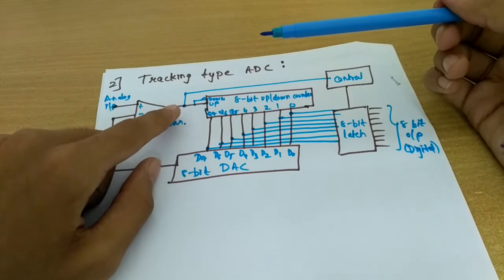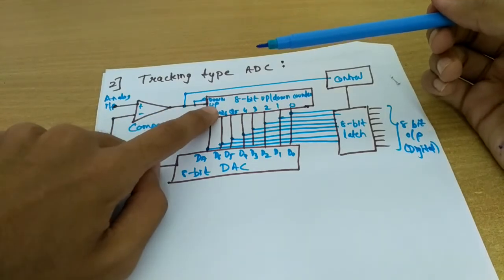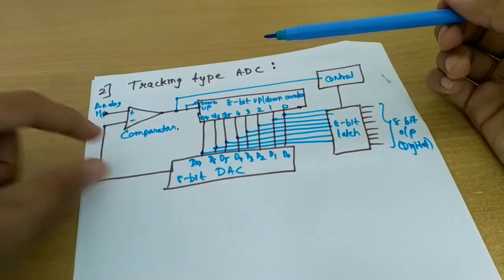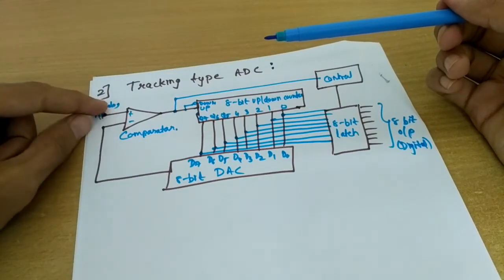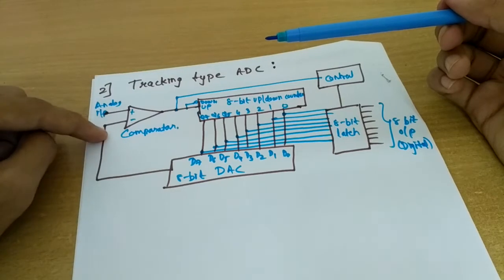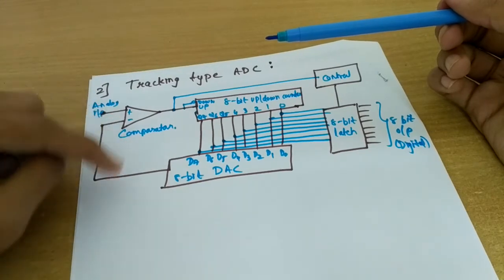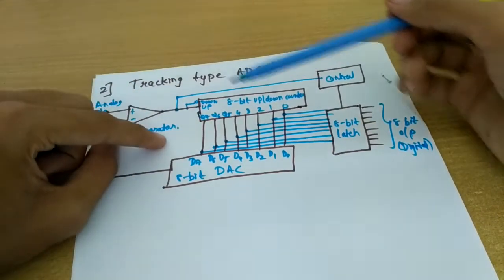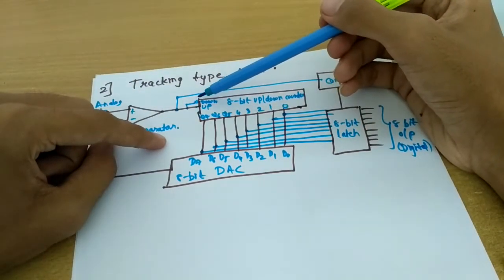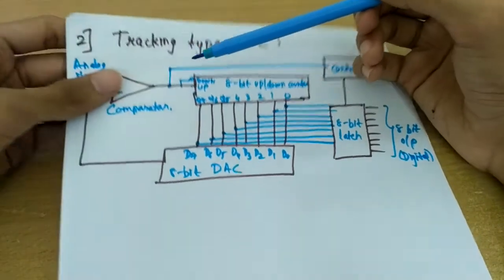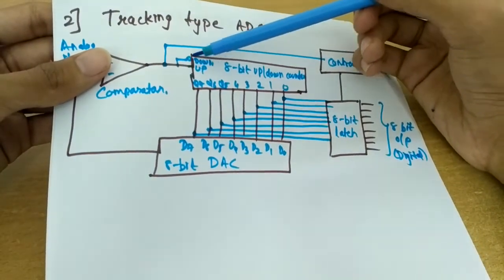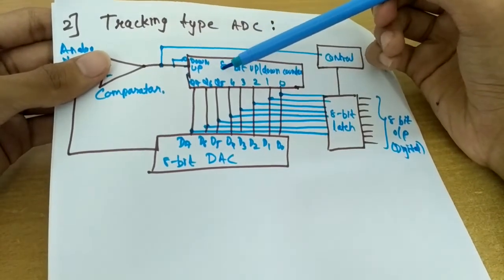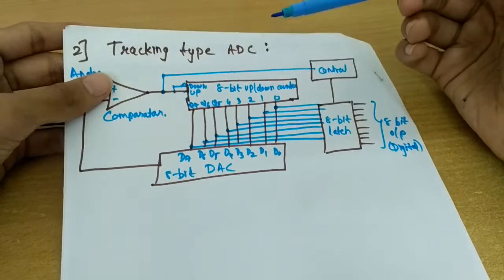This is our comparator. When the DAC's output is less than the analog input, it will give high logic and behave as an up counter. But the moment they become equal, and after that when the DAC's output goes higher than the analog input, it will behave as a down counter because this is an active low signal — you can see the dot over here.